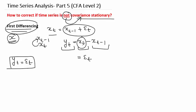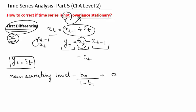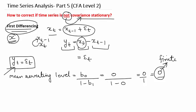For a time series to be covariance stationary, it needs to have a constant and finite mean level. The mean-reverting level is calculated as B0 divided by (1 minus B1). For this new time series, B0 is 0 and B1 is 0, giving us 0 divided by 1, which equals 0. A mean-reverting level of 0 is finite, and hence the time series y_t obtained from first differencing is covariance stationary.